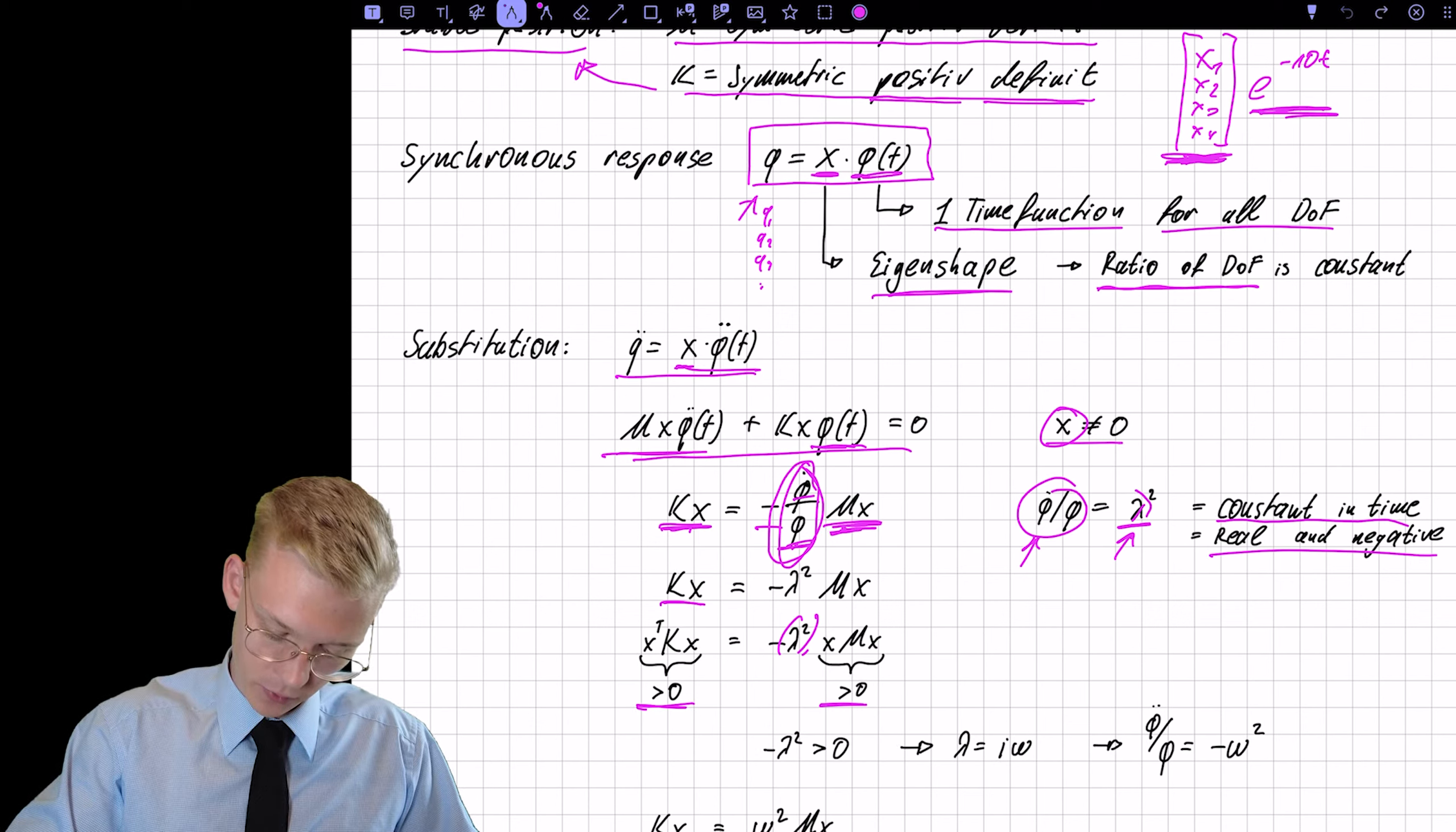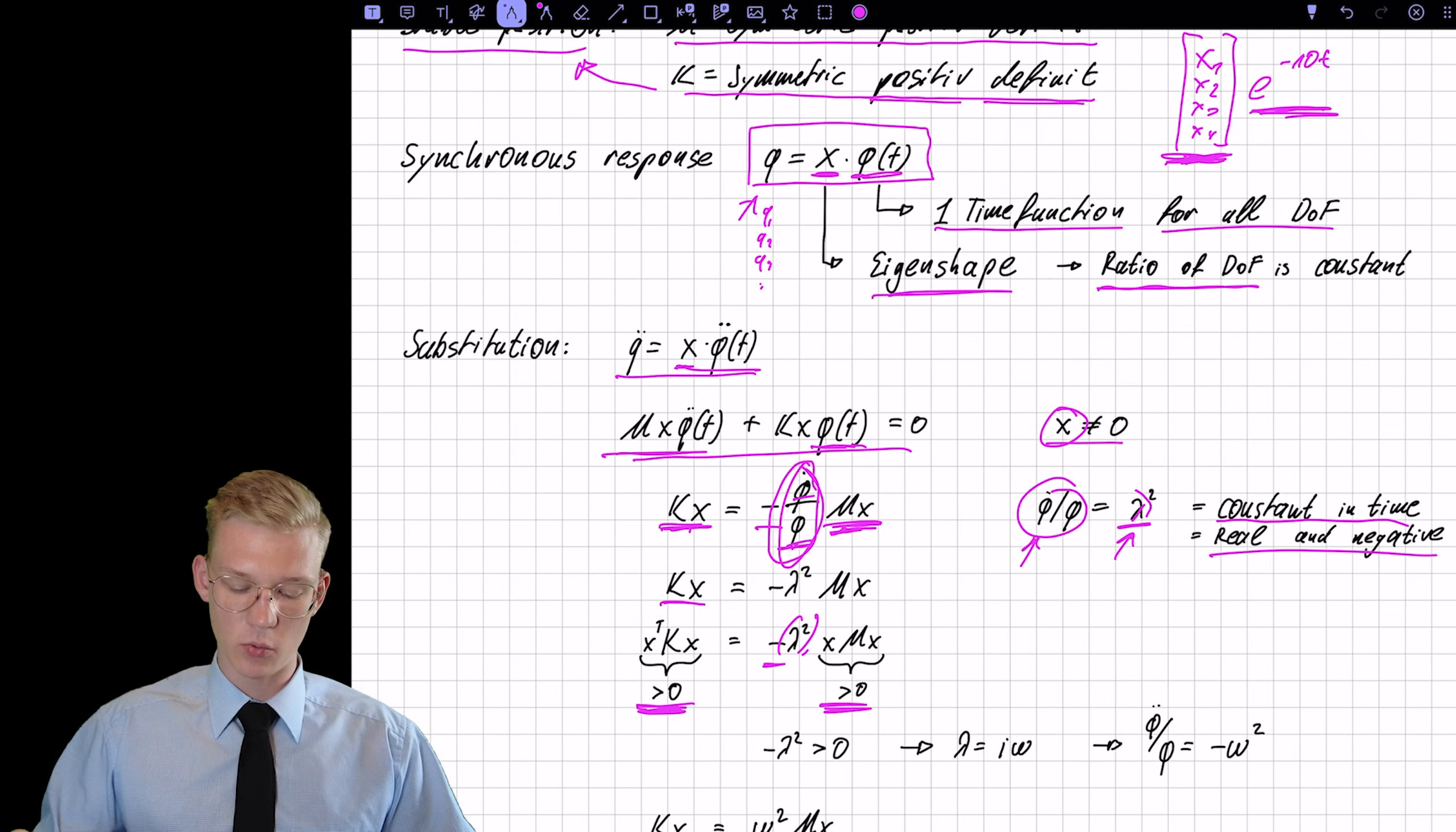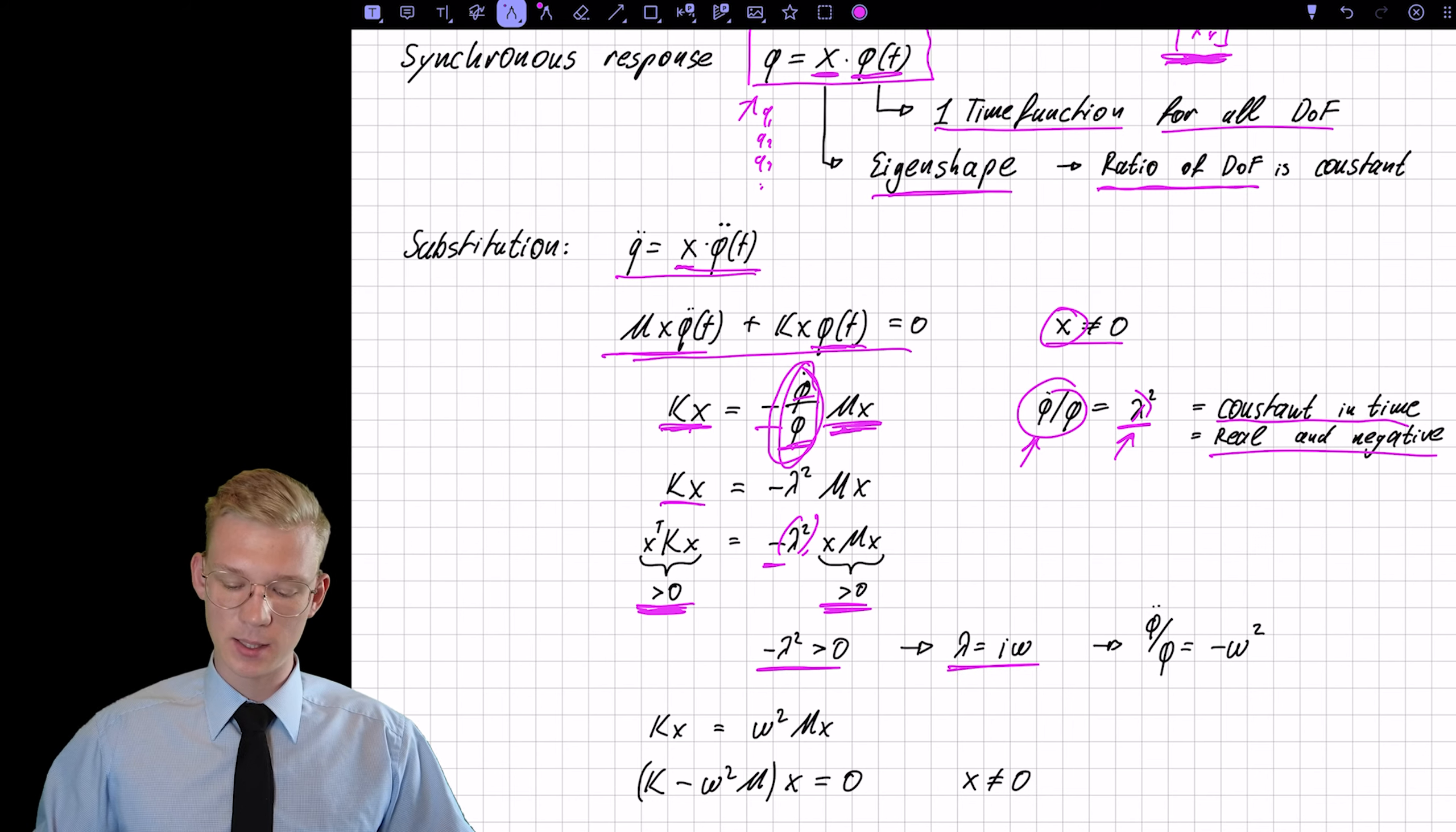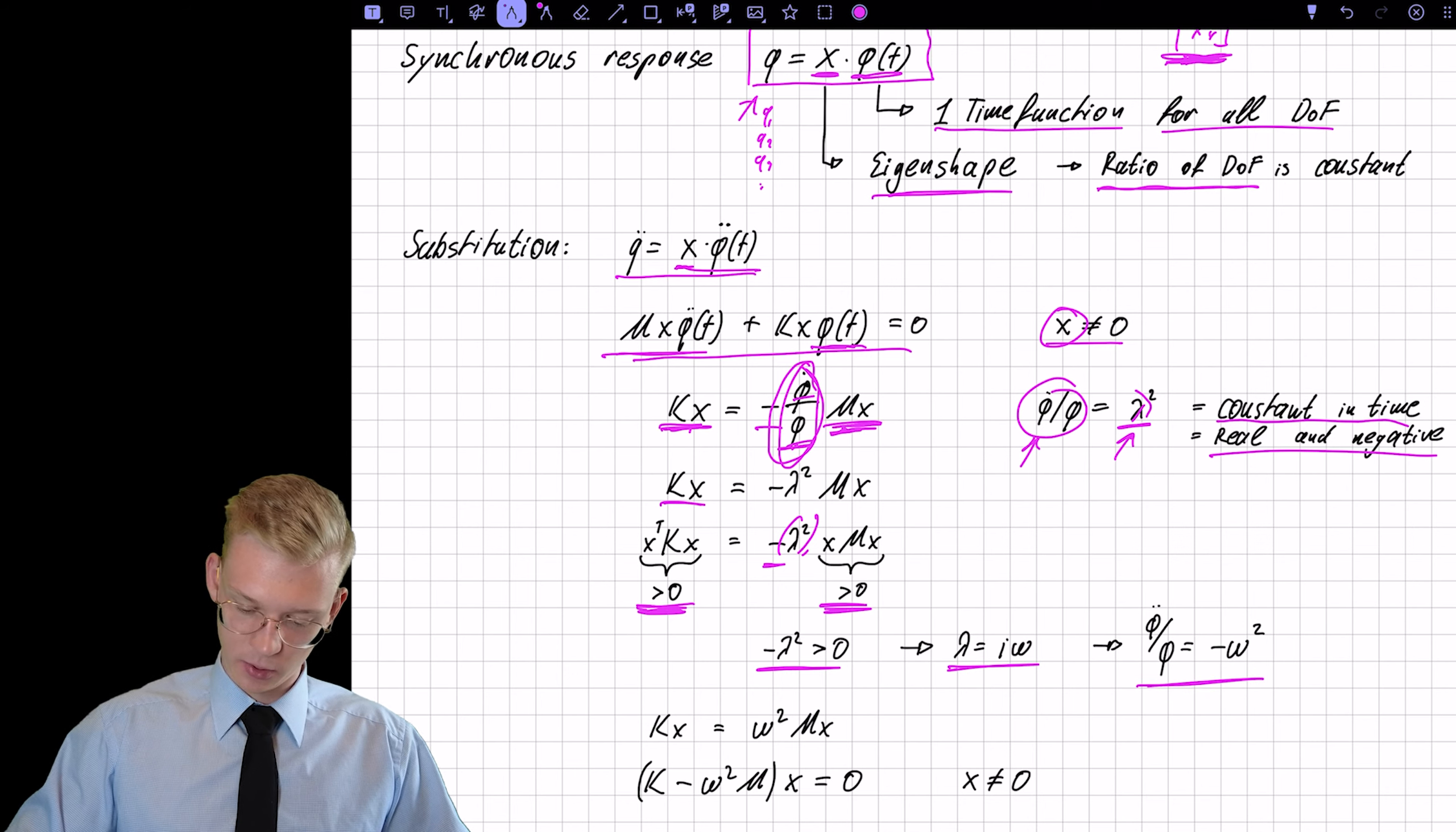If we pre-multiply with X on the right, this is also positive. And this value has to be also positive. And this can be only positive if lambda squared itself is negative. So we get minus minus lambda squared. So lambda is real and negative because this is real and positive, this is real and positive, and we have a minus here.